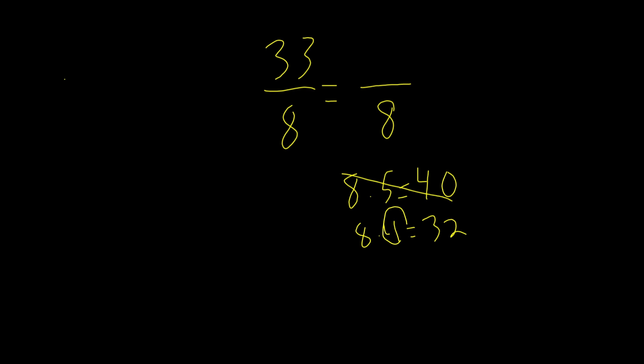So 8 times 3 wouldn't work out because that's 24. And although that's less than the numerator, it still isn't the greatest amount of times it can go into something with it being less than 33. So 8 times 3 still wouldn't work out.